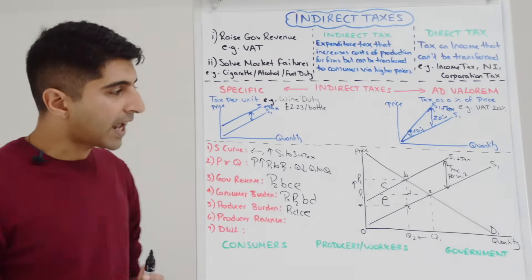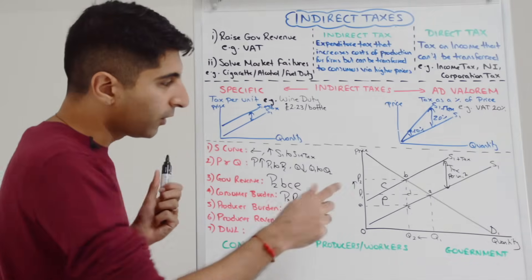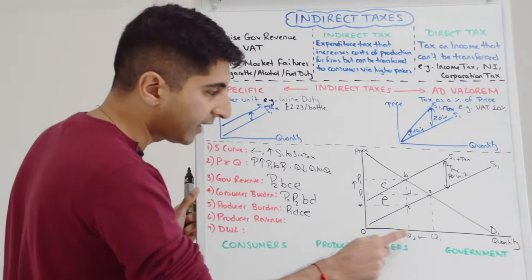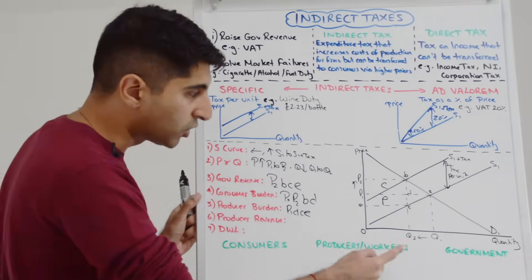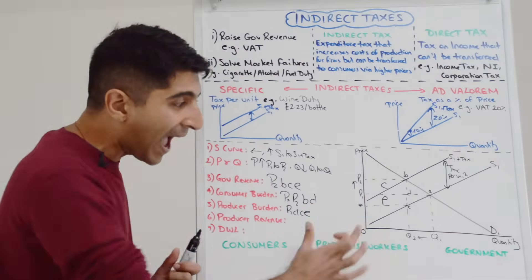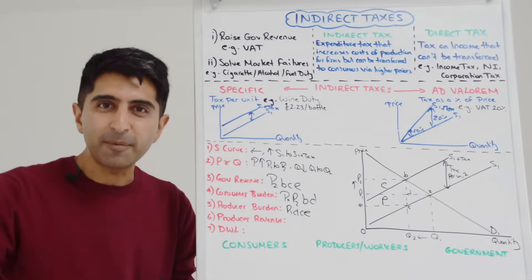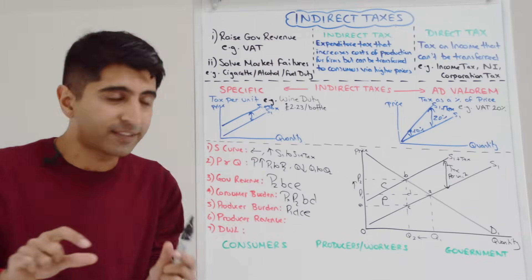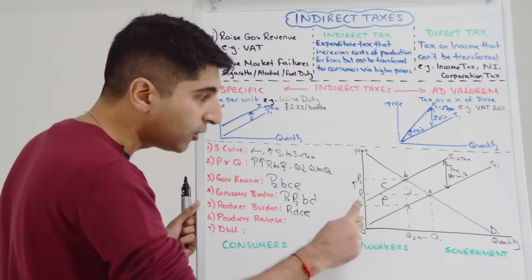But what is it now with the indirect tax implemented? Well you might think producers are charging P2, they're selling Q2, so surely it's P2 times Q2, P2BQ20. But remember a lot of that area is actually going to the government via government revenue. We have to minus that off, minus off the government revenue.